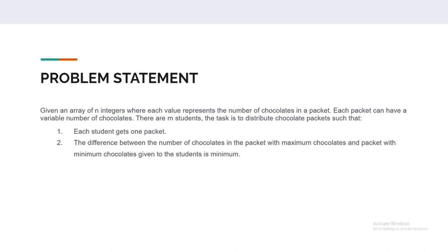The problem statement says that we are given an array of n integers where each value represents the number of chocolates in a packet. The array has n values, each value represents one packet, and the value of that array element represents the number of chocolates in that particular packet.